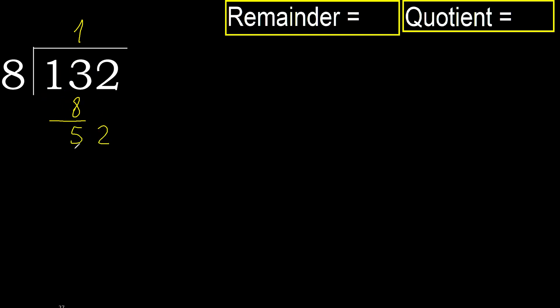Next 52. 8 multiplied by 7 is 56, 56 is greater. 8 multiplied by 6 is 48, 48 is not greater. Ok, subtract. 52 minus 48 is 4.